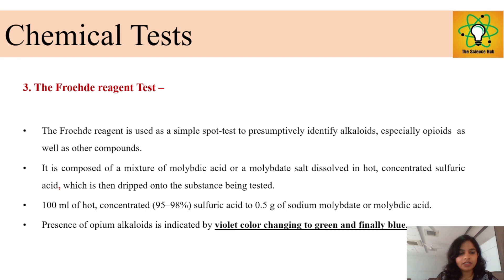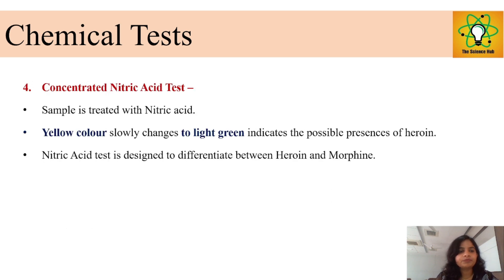Another chemical test is the Froehde reagent, also a spot test, in which the reagent is a molybdate salt heated with concentrated H₂SO₄. It changes the color from violet to green and then finally to blue. The next test is the concentrated nitric acid test.